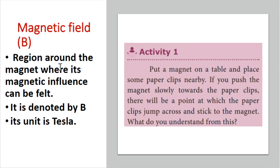The basic property of a magnet is the Magnetic Field. You can observe this through a simple activity: put a magnet on a table and place some paper clips nearby. If you push the magnet slowly towards the paper clips, there will be a point at which the paper clips jump across and stick to the magnet — they are attracted at a particular point. This property is the Magnetic Field.